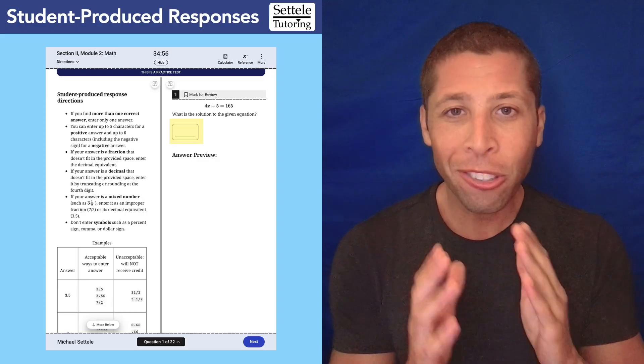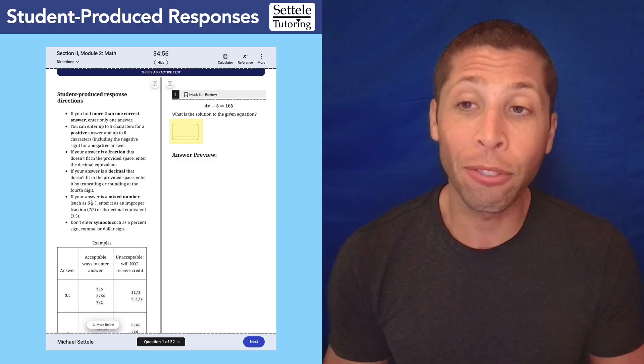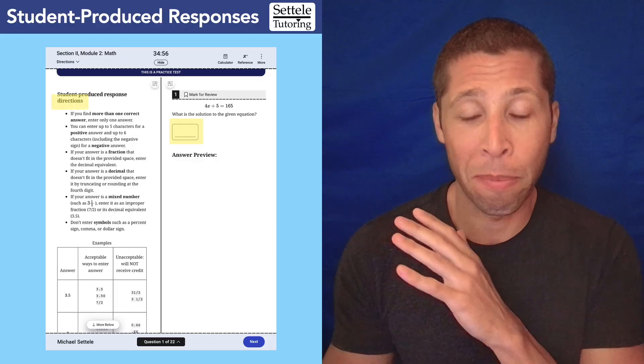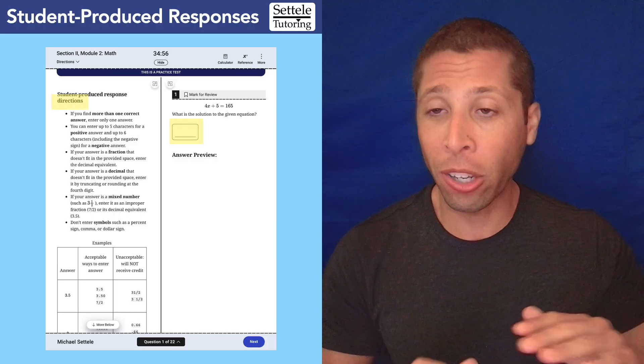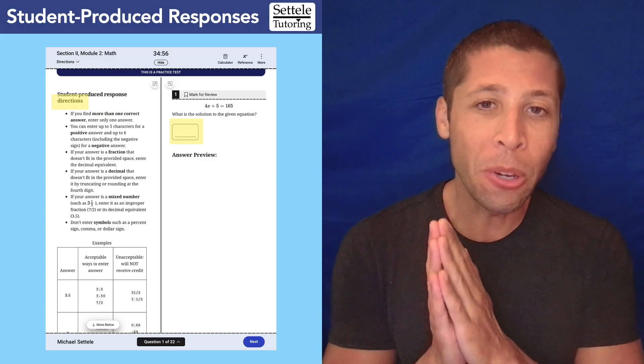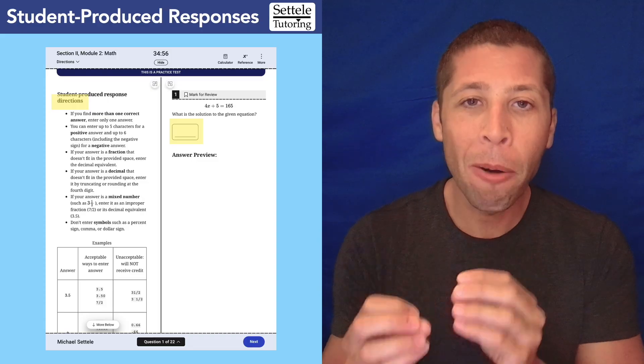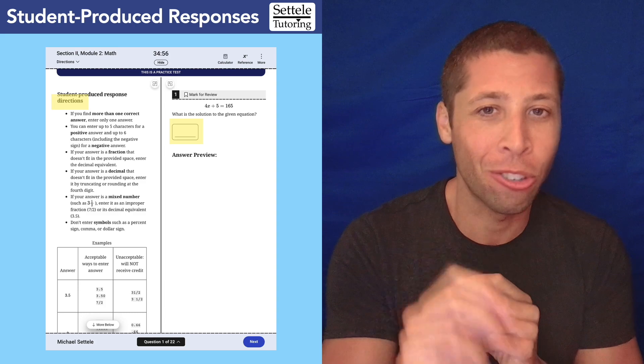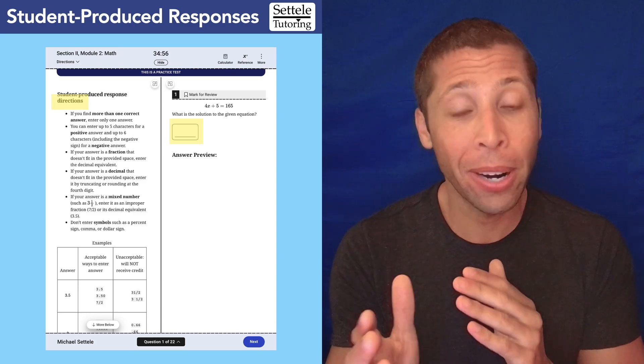These questions are very easy to recognize. They're not going to have answer choices. They'll have this box where the A, B, C, D normally are. Plus, next to each and every one of these SPR questions is a set of directions on how to fill them out. So we will get to these instructions. I will walk you through them, but before we do I am super curious how many of you have actually read these instructions before. Give me a comment. If you have read them, when did you read them?